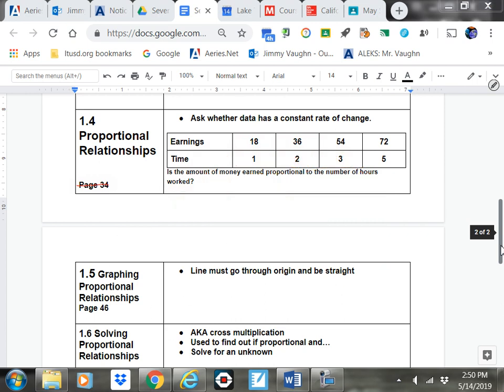This one's pretty straightforward - constant rate of change. All you have to do is see if things are proportional or changing constantly. So is the amount of money earned proportional to the number of hours worked? So what do we do to 1 to get it to be a 2? Times 2. 18 times 2 is 36. So yes, it's proportional. And if you skip all the way out here, 1 times 5 is 5, 18 times 5 is 72. So this table is showing a proportional relationship. If you did that multiplying, or dividing if the things were going down, and they didn't come out the same, then it wouldn't be proportional. Look on page 34 if you need more specific examples on that.